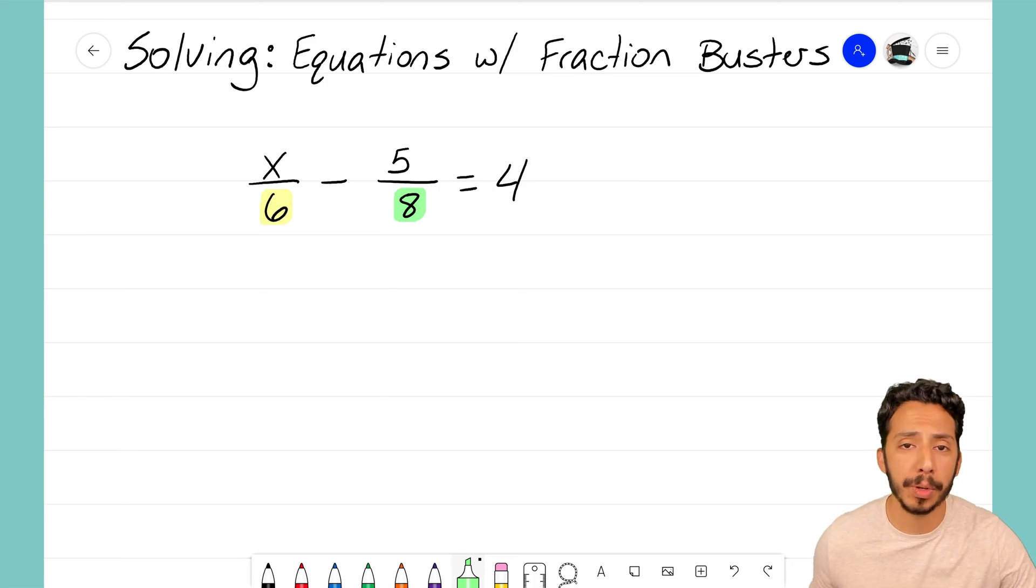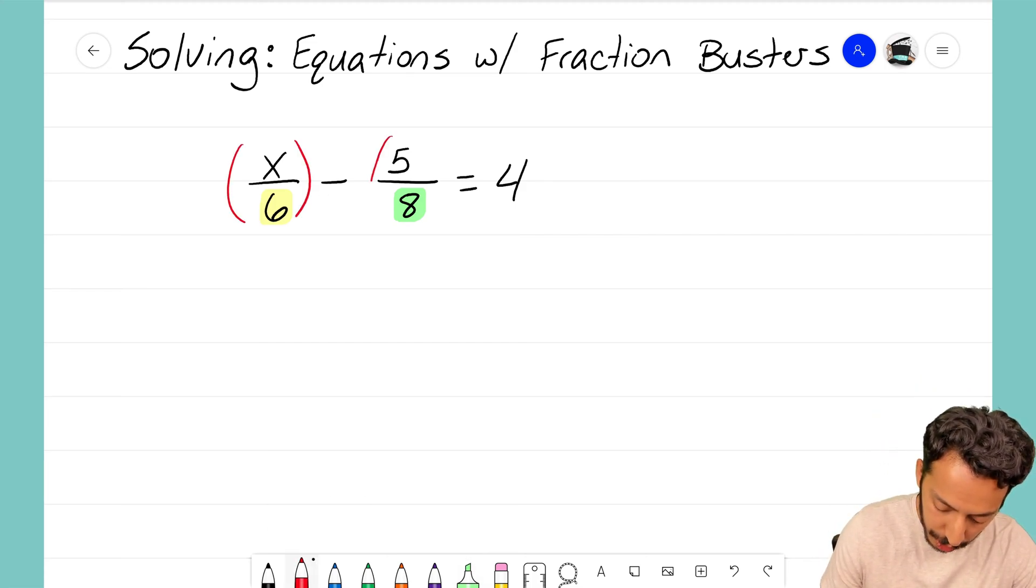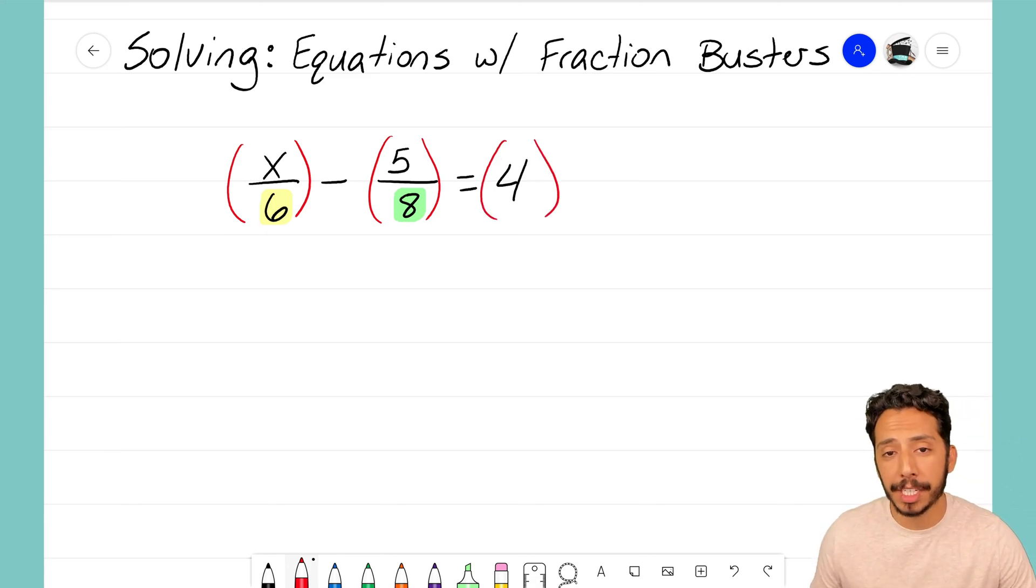Fraction busters are so helpful because what we're going to do is we're going to think of a number to multiply every single term in this equation. Notice I'm breaking up the fractions—I'm going around every single term, including the four here that's technically not a fraction, but we've got to make sure we have it included. We have to come up with a number to multiply each term by so that we can bust up those fractions. And here's what you want to do: you want to think of a number that